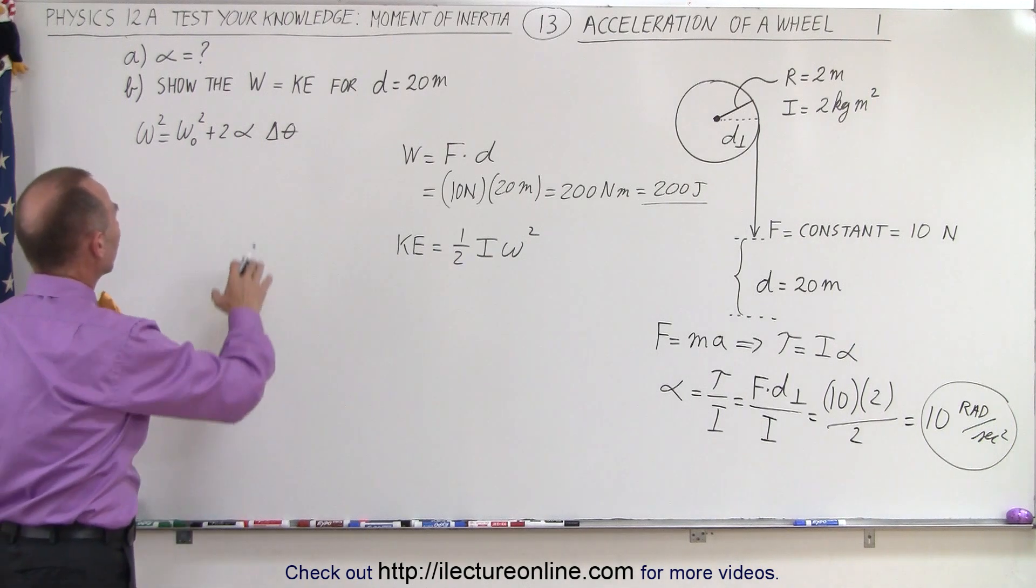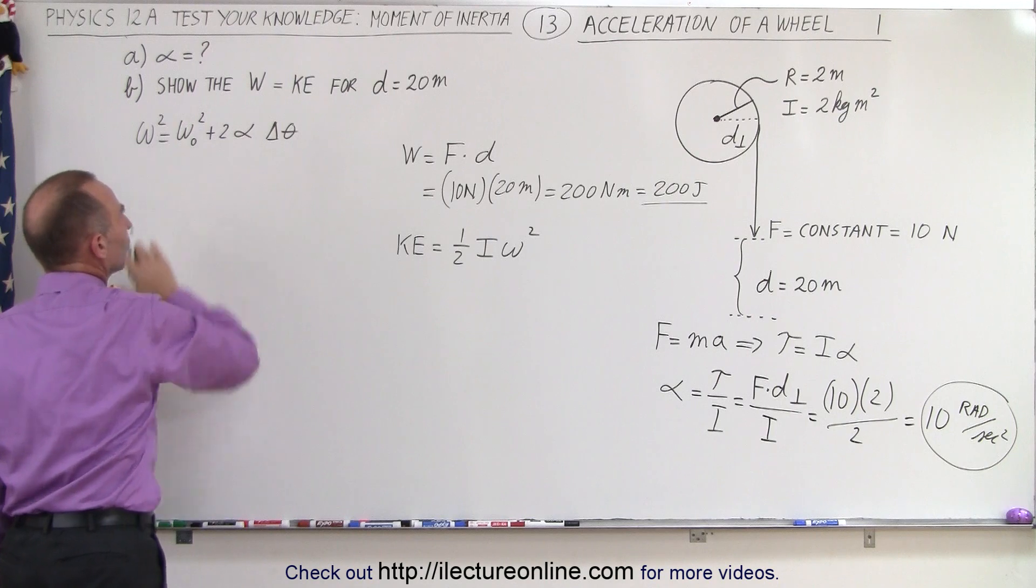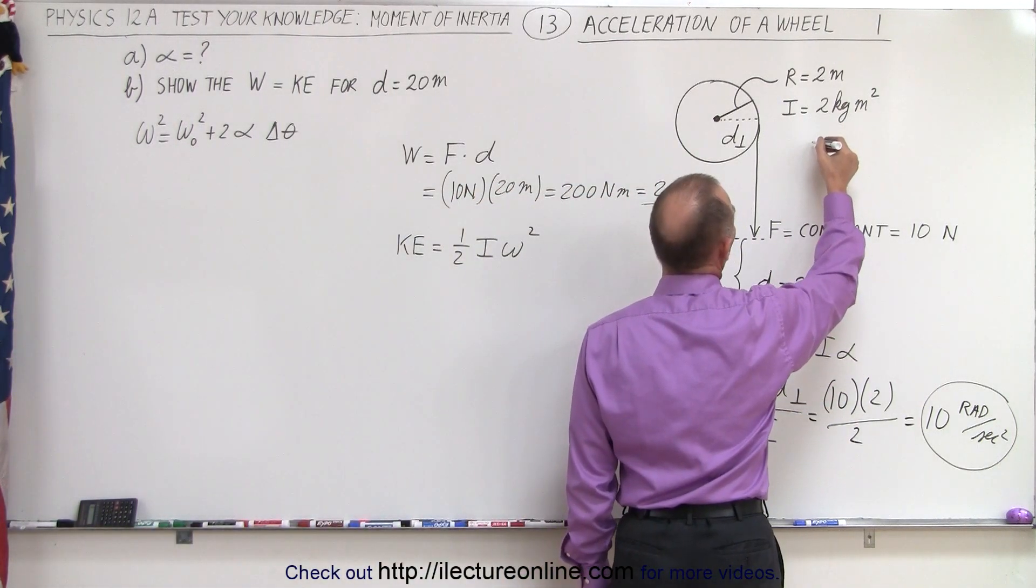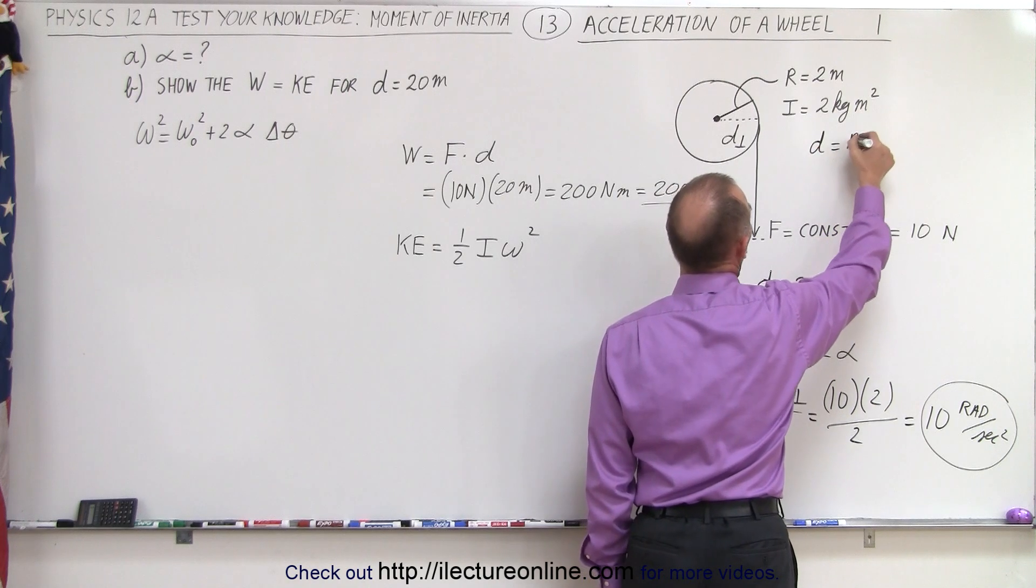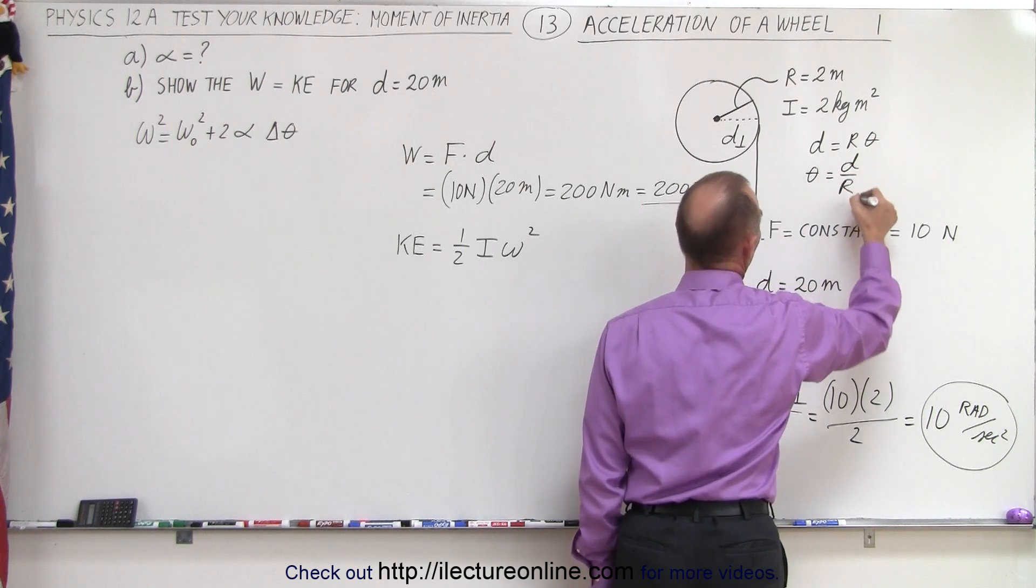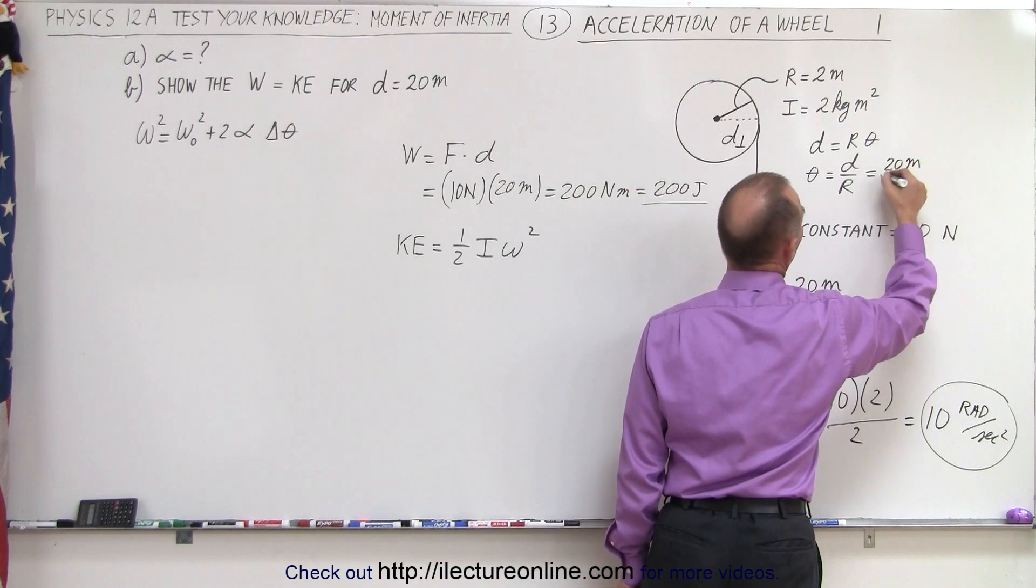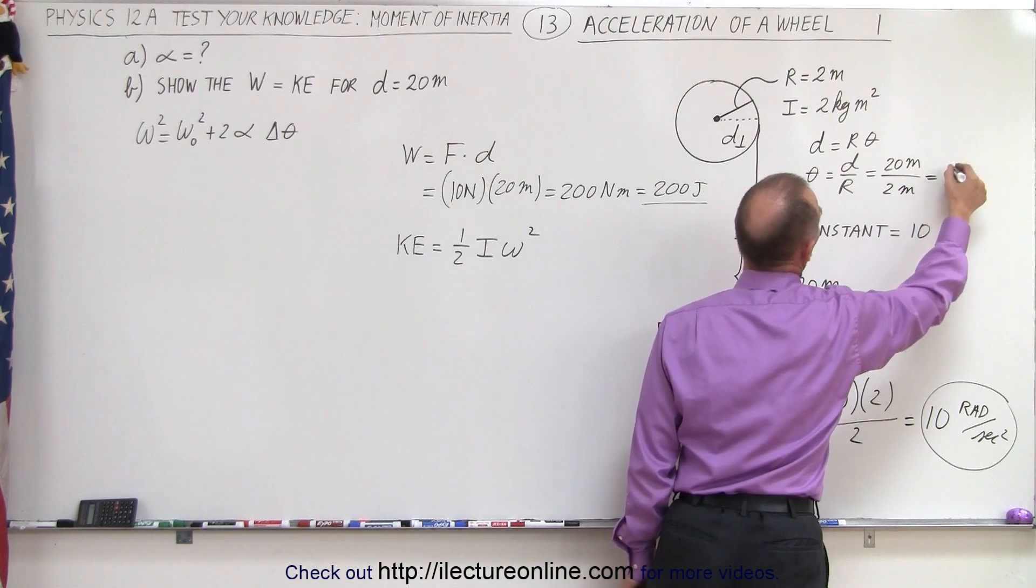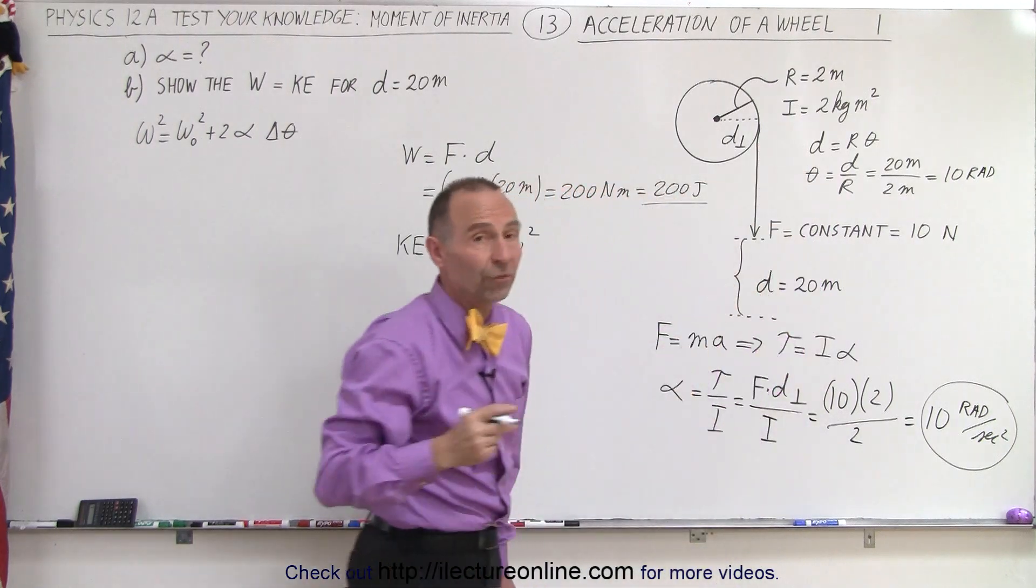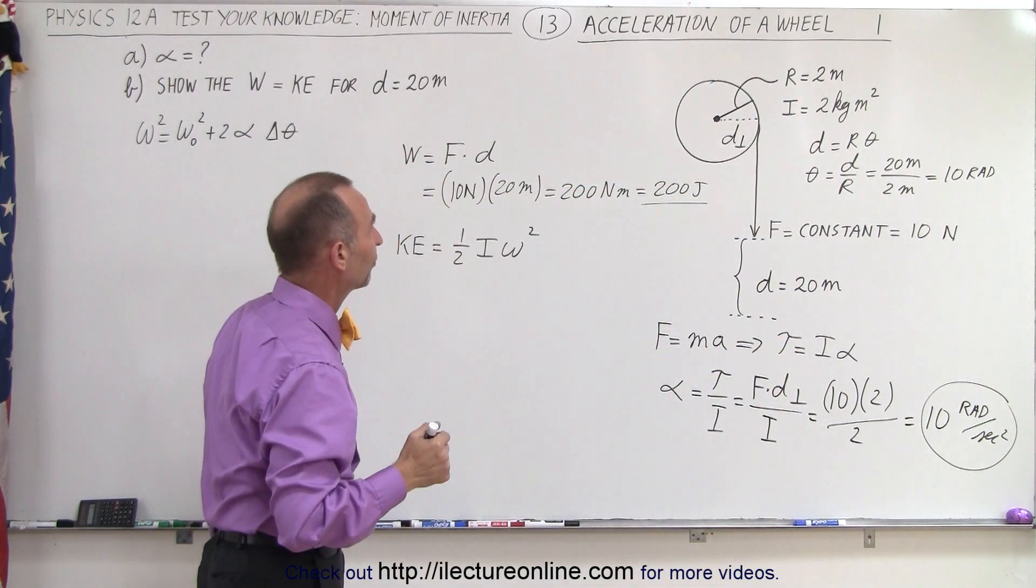So to find that, we need to find delta theta here, because omega initial is equal to zero. So to find delta theta, we can say that the distance is equal to r times theta, or theta is equal to distance divided by r. The distance is 20 meters, and the radius is equal to 2 meters. So that would be equal to 10 radians. So when we've pulled down the distance of 20 meters, we know that we've got an angular displacement of 10 radians.